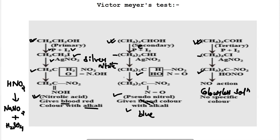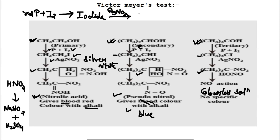In summary, the Victor Meyer test has three steps: first, react red phosphorus and iodine with the unknown alcohol to form corresponding iodides; second, treat the iodide with silver nitrite to obtain corresponding nitro compounds; third, treat the nitro compounds with nitrous acid. Primary alcohol gives nitrolic acid with blood red color, secondary gives pseudonitrol with blue color with alkali, and tertiary gives a colorless solution.